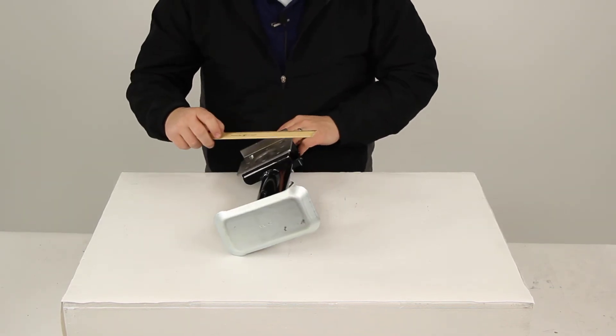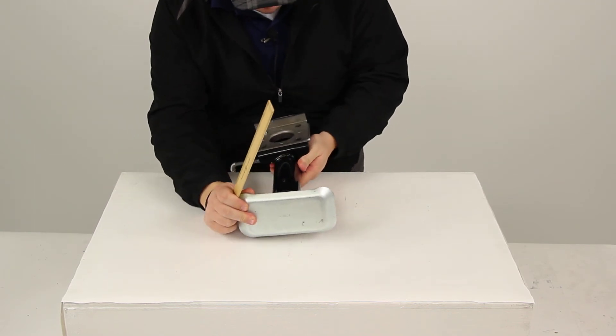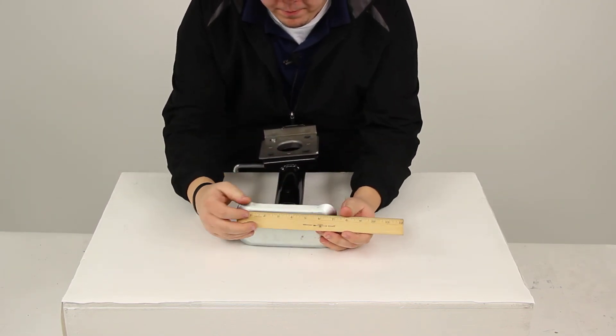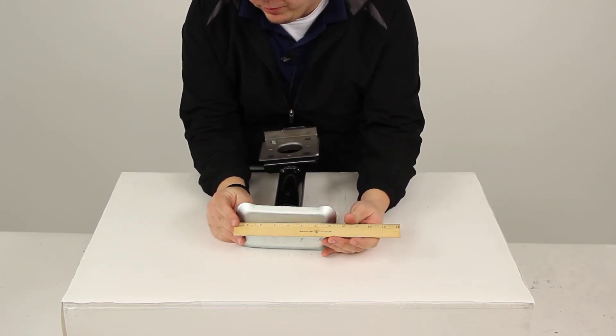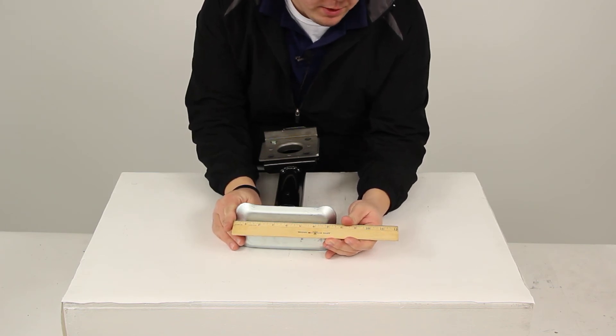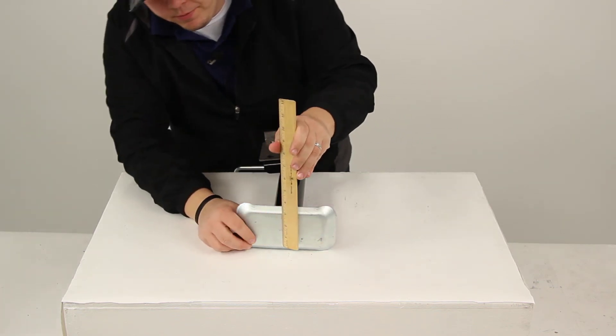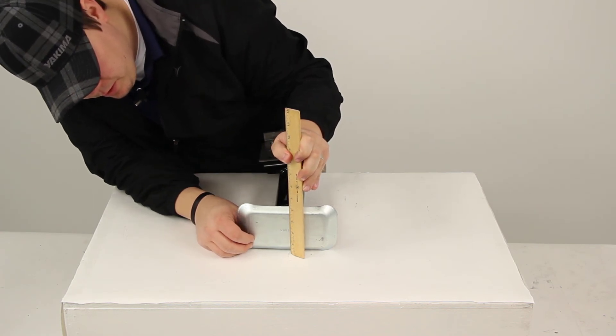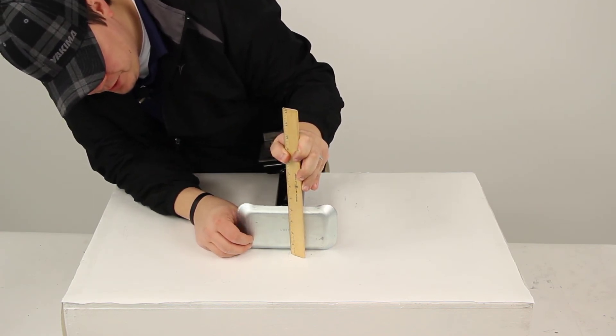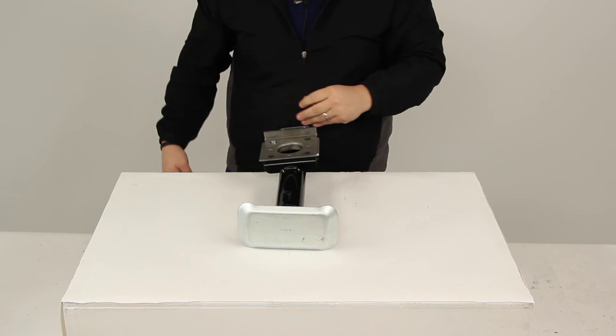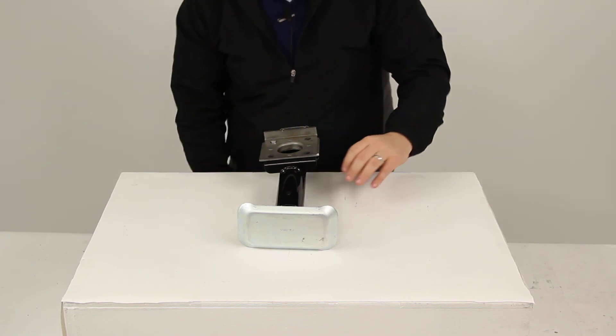The footplate measures 7 1/2 inches by 4 inches, and this jack has a lift capacity of 2,000 pounds.